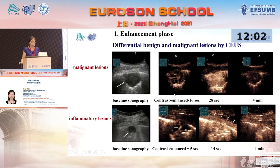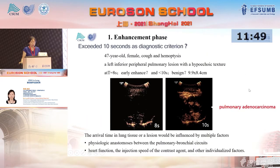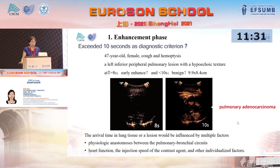For example, malignant lesions show enhancement at around 6 seconds, and benign lesions show enhancement at a very early time, around 5 seconds. However, in some cases we can find very early enhancement in malignant lesions as well. We know the arrival time of the contrast agent in the lung and in lesions may be influenced by multiple factors, such as cardiac function, lung disease, or the injection speed of the contrast agent.